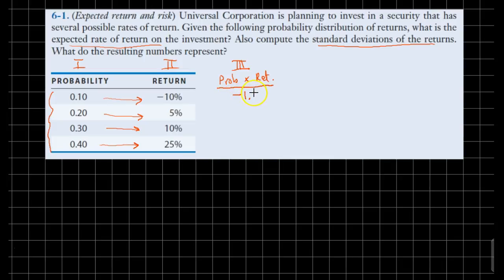In the second state of the world, with 20% chance, we will make 5% return. So that would be equal to 20% times 5%. It's again 1%, but this time it's a plus 1%.